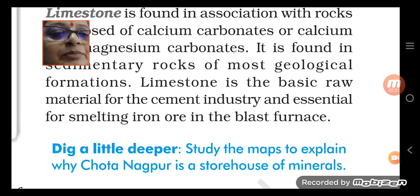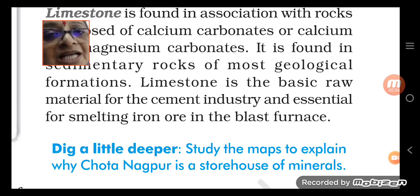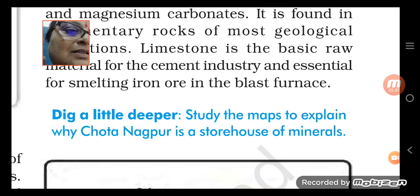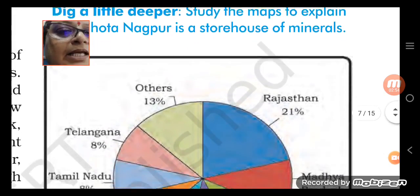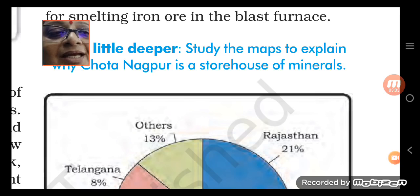Limestone is the basic raw material for the cement industry — without limestone, cement cannot be made. It is also essential for smelting iron ore in the blast furnace. The blast furnace is the big structure where raw material is processed. Now please understand that Chota Nagpur is a storehouse of minerals — a lot of minerals are available in the Chota Nagpur plateau.